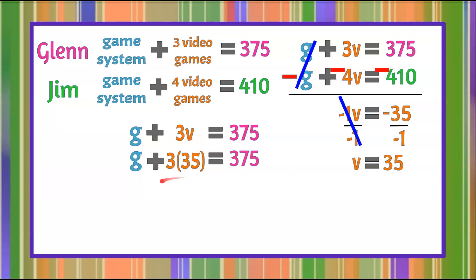We're going to multiply here. So bring down g, add, 3 times 35 is 105, and that still equals 375. To solve for g, that cost for one game system, we're going to undo add 105 by subtracting 105 from each side. This gives me a zero pair, left with g on the left, is equal to 375 subtract 105, which is 270.